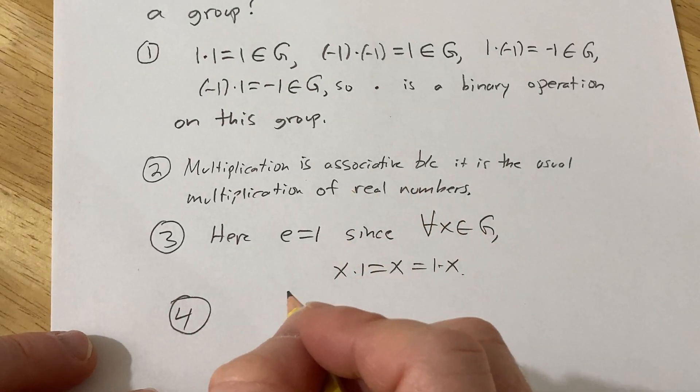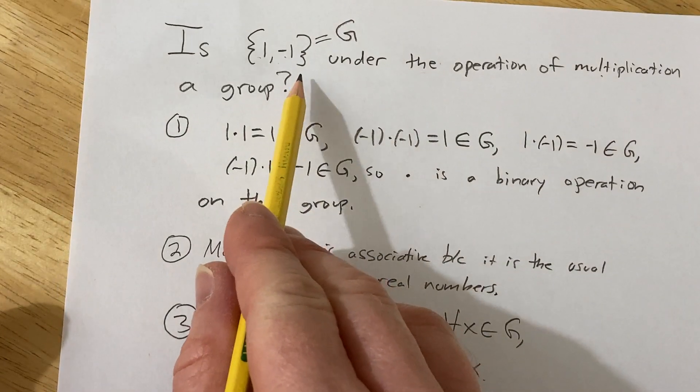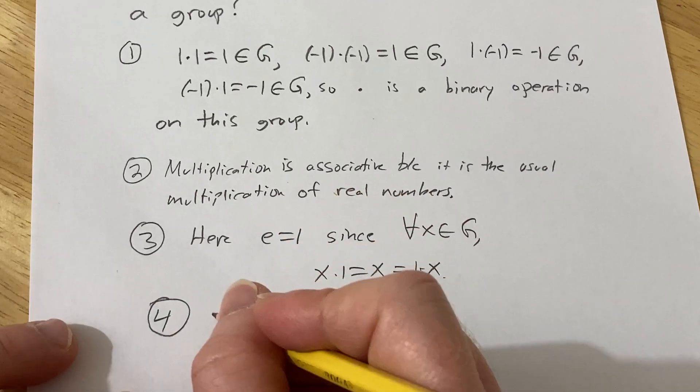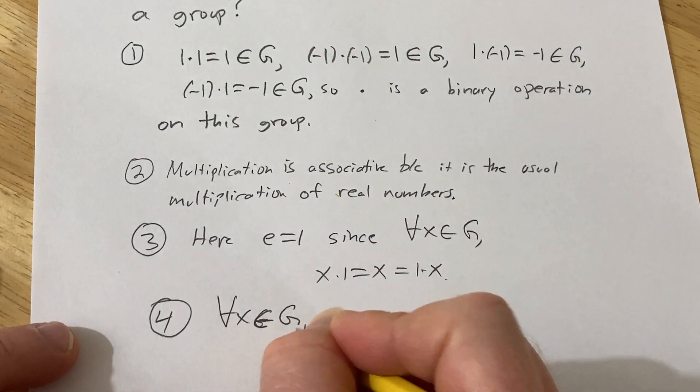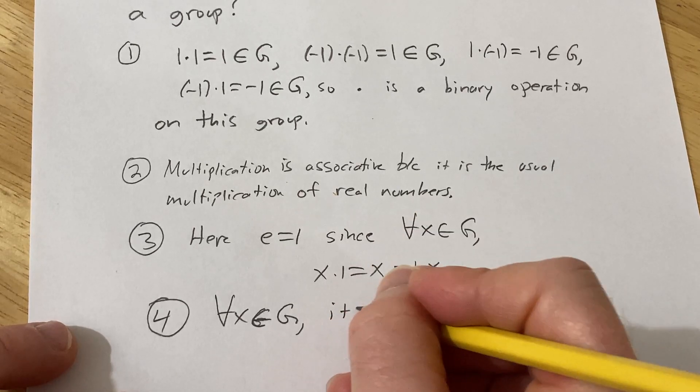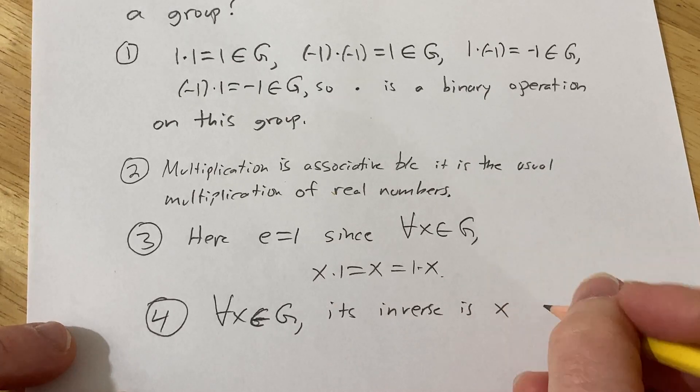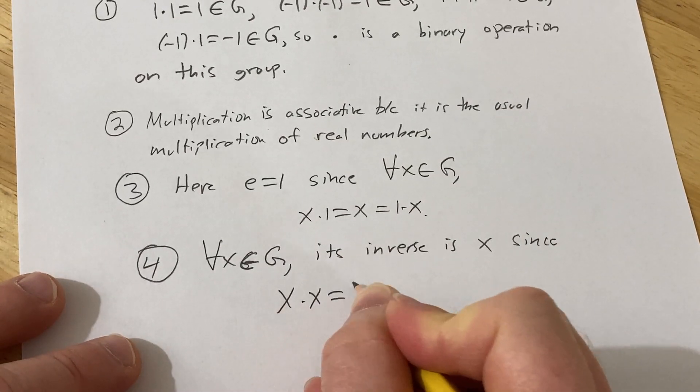inverses, we have to show that every element has an inverse. And in this group, or this set, basically every element is going to be its own inverse. So for all x in g, so for every x in g, its inverse is x,